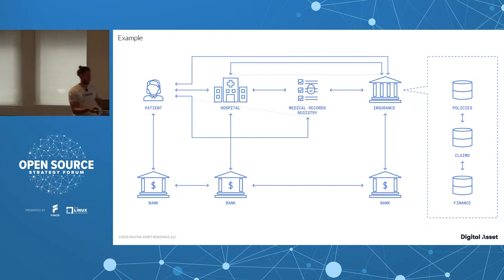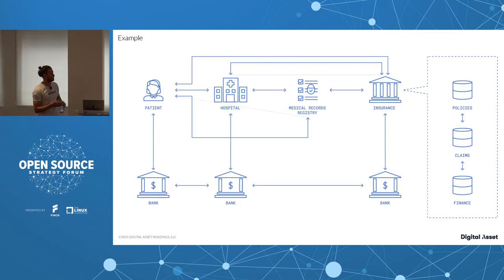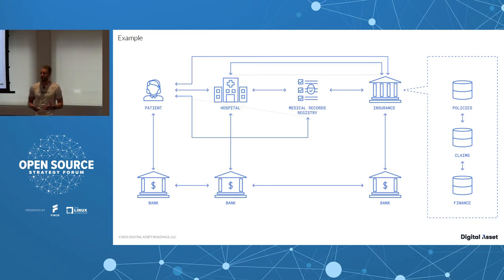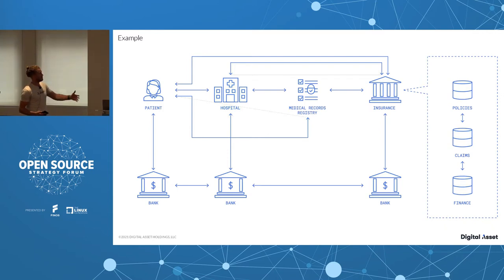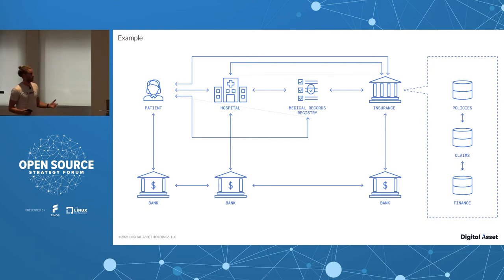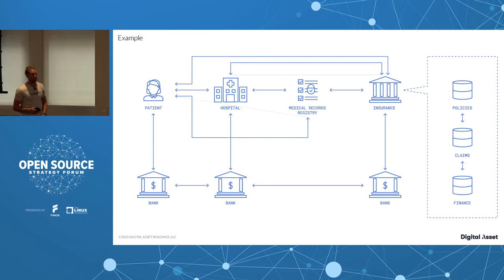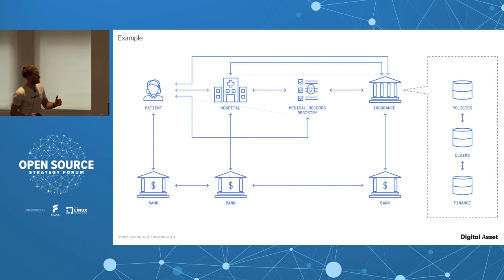Let's look at a simple example: visiting a doctor. In private healthcare and often in the US, you see a doctor, a hospital, medical records are involved, costs are incurred, an insurance company gets involved, and all of those have banks — so just for one doctor's visit, we now have seven parties that need to share data and transact. If you expand insurance alone, you get three more sub-parties: policies, claims, and finance — giving us ten parties total.